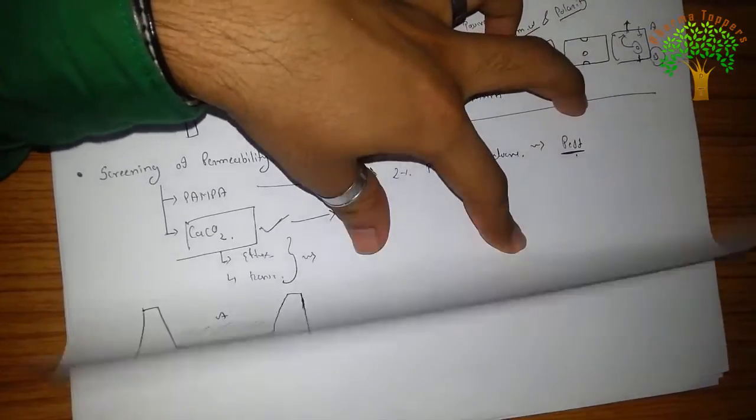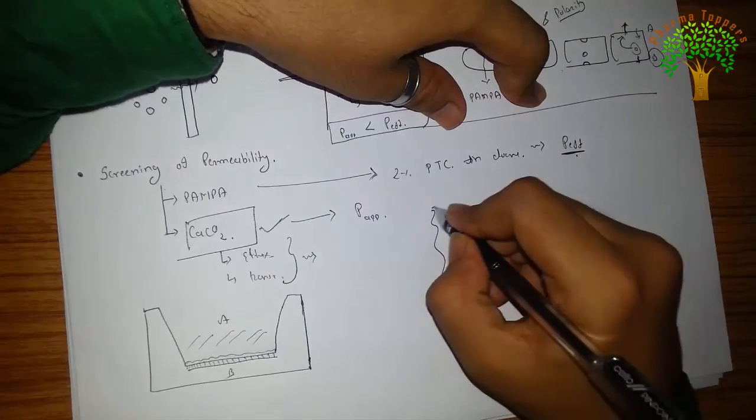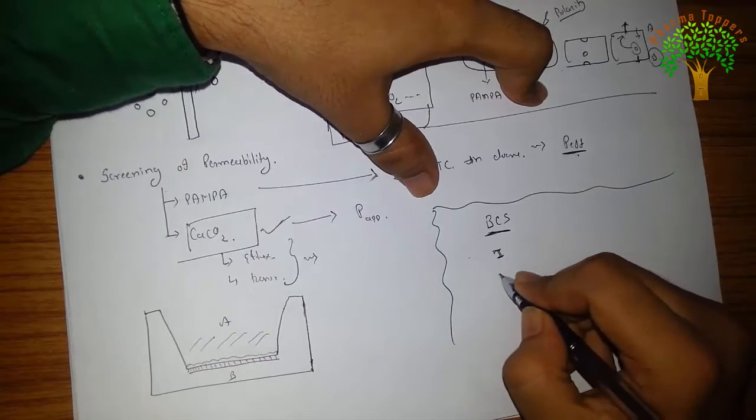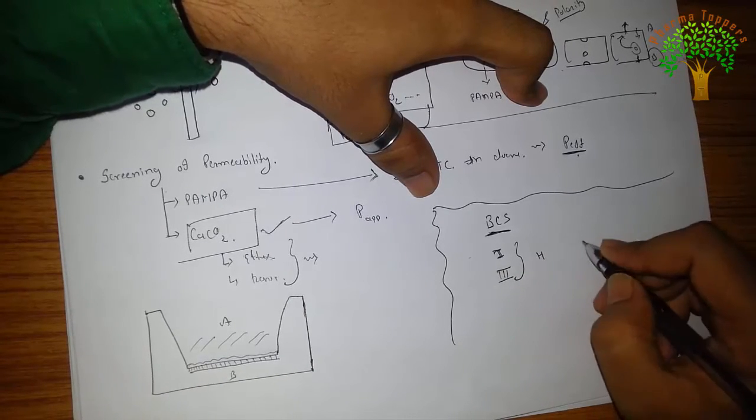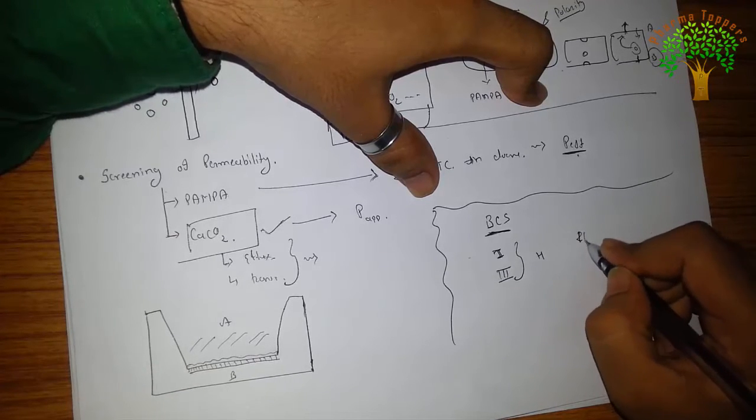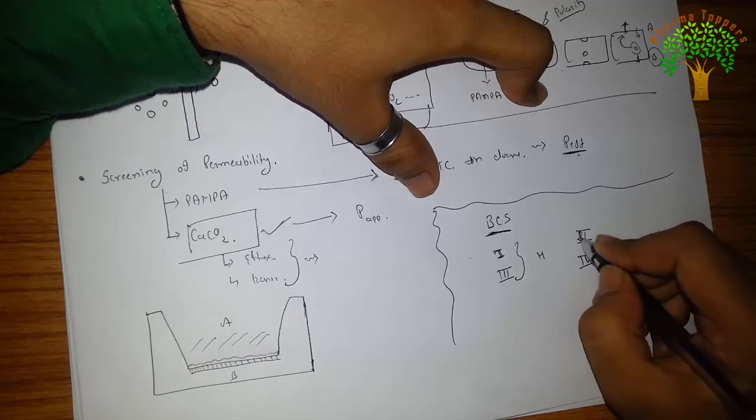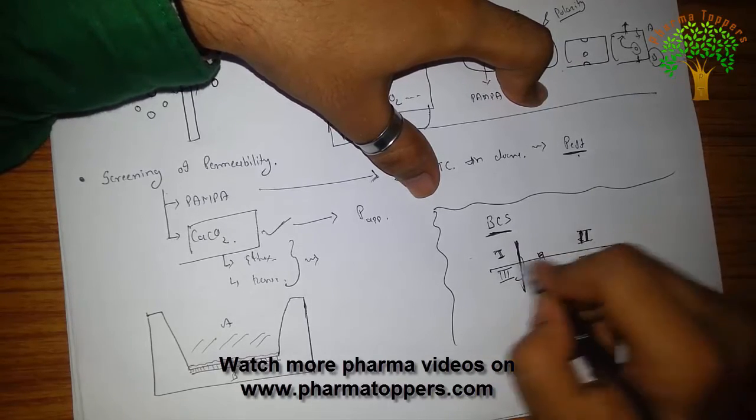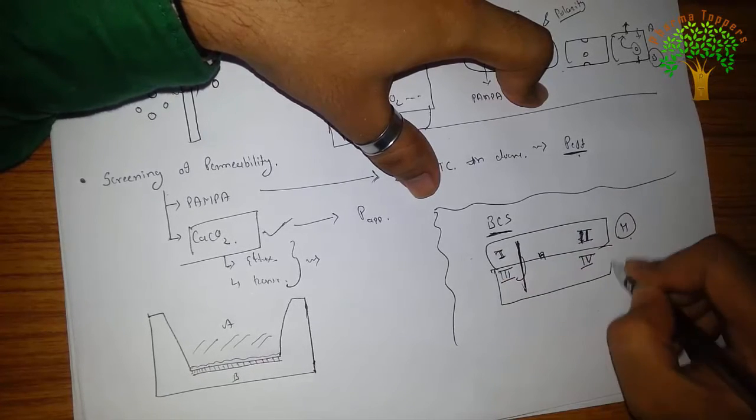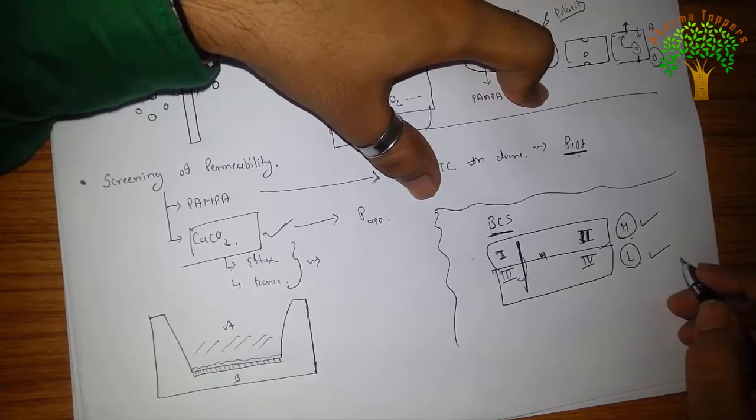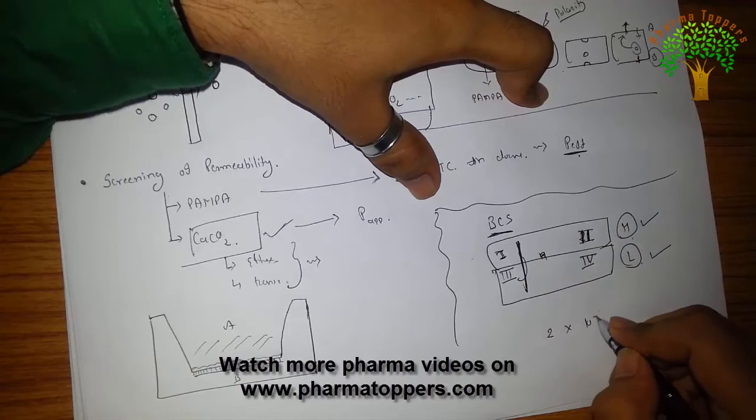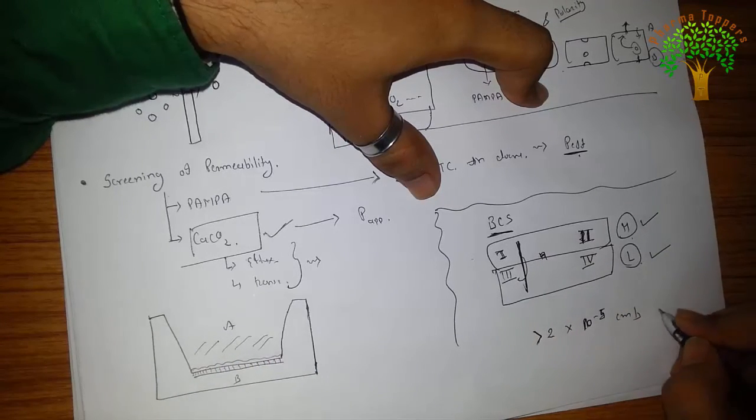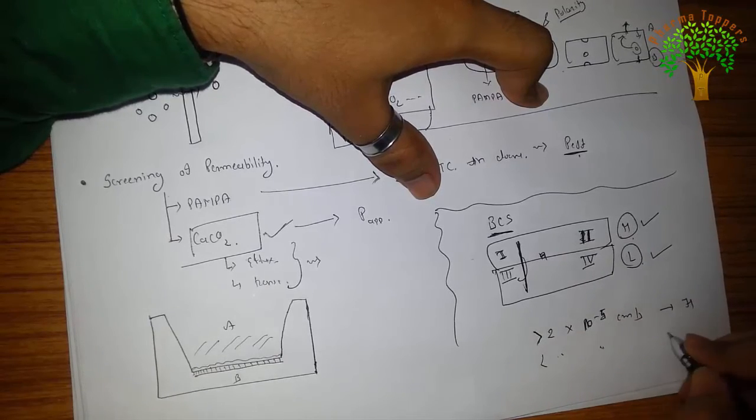So this is all about the permeability. And according to the Biopharmaceutical Classification System, the compounds which fall under class 1 and class 3 have high permeability. So what is high permeability and what is low permeability? Generally, when 2 into 10 raised to minus 5 centimeters per second, it is greater than that, it is termed as high permeability and less than this value is termed as low permeability.